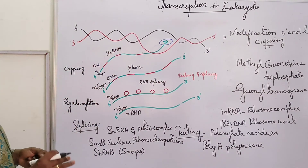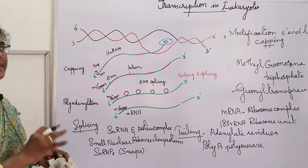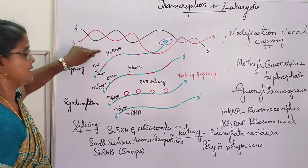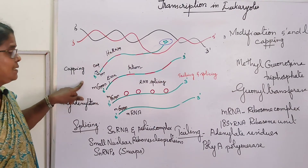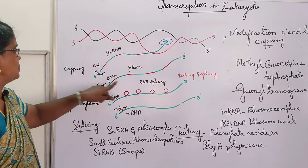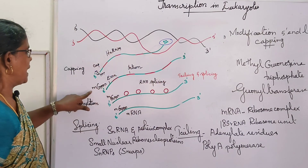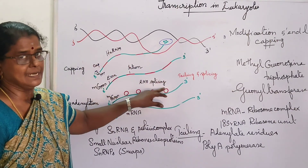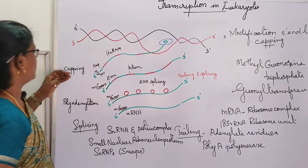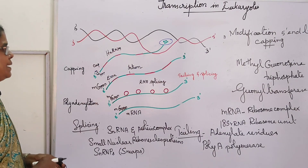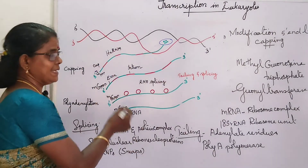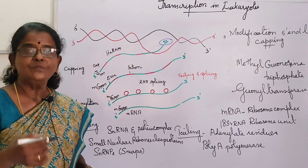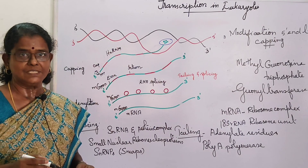After all three processes, HnRNA is completely processed and converted into mature mRNA. The processed HnRNA is now called mRNA, and it is transported out of the nucleus to the cytoplasm for translation. Thank you, students.